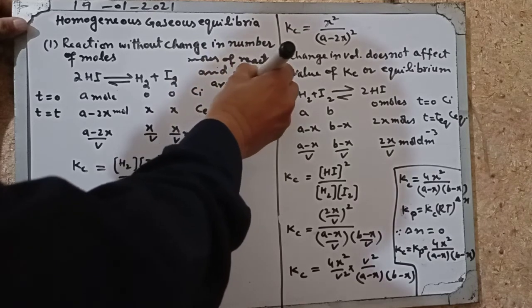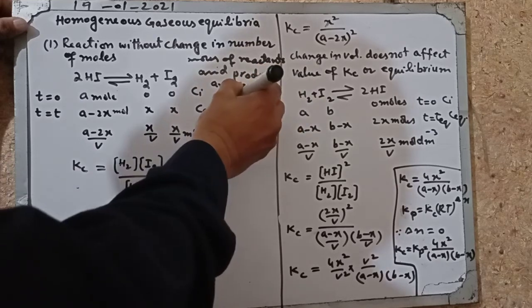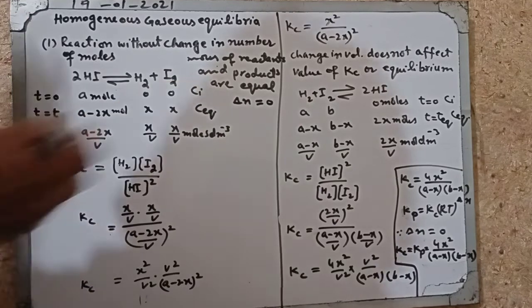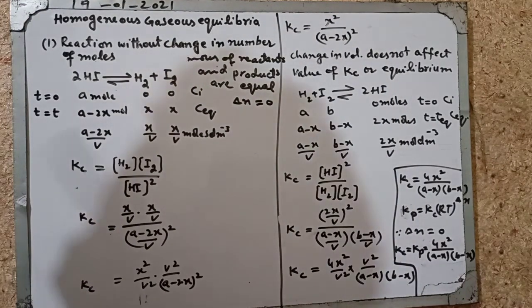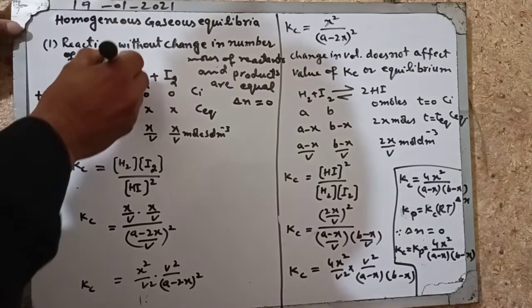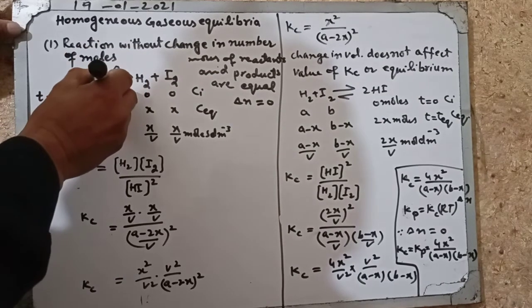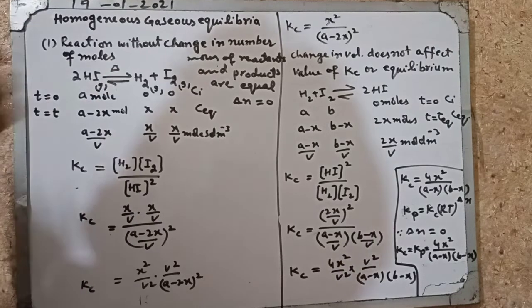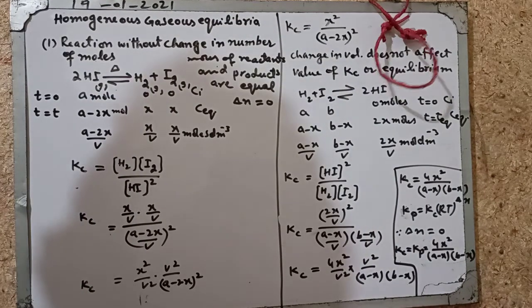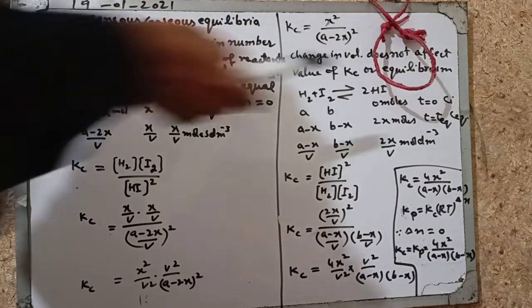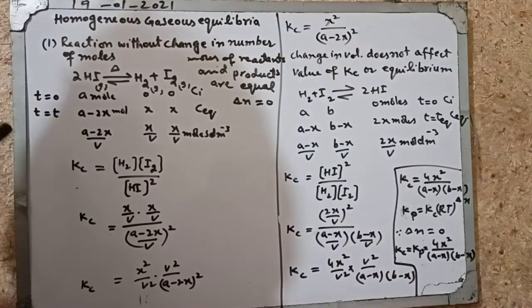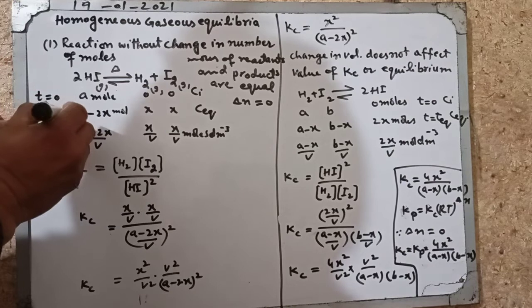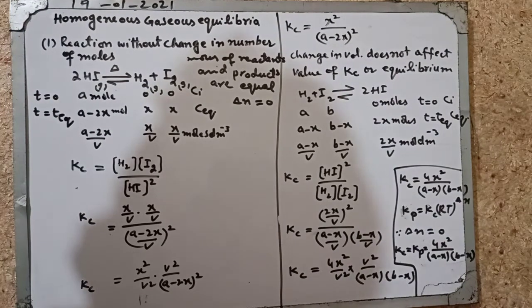The difference between the number of moles of reactants and products is zero, no change. Like HI when heated, it decomposes to give I2 and H2 gas. Let initial concentration of HI is a moles, and after equilibrium time some is decomposed and converted into the products.